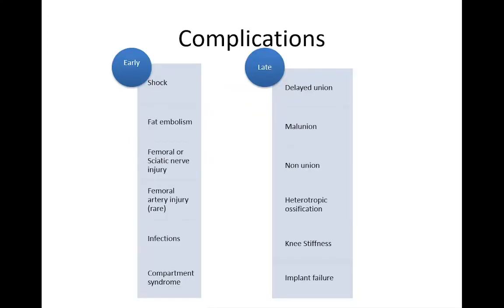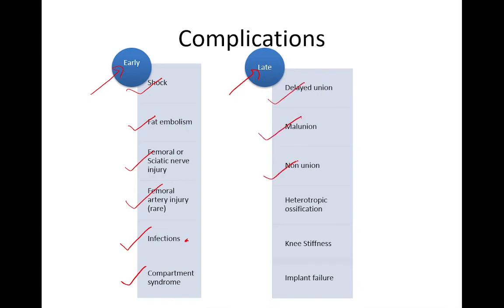Complications of shaft of femur fractures are divided into early and late. Early complications include shock, fat embolism syndrome, injury to the femoral or sciatic nerve, injury to the femoral artery, infection, and compartment syndrome. Infections are common in open fractures; compartment syndrome is rare because the femur is a large compartment. Late complications include delayed union, malunion, nonunion, heterotopic ossification, knee stiffness, and implant failure.